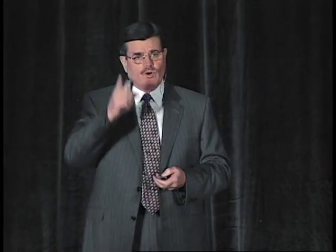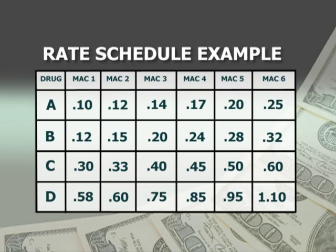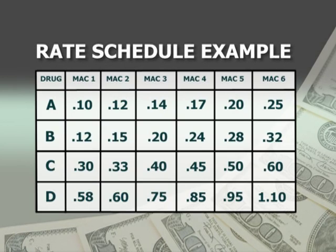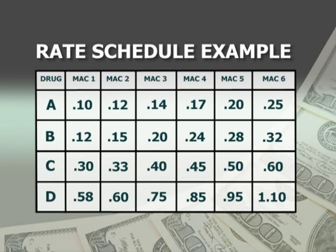We're going to talk about multiple MAC lists and discount lists. These MAC prices are put into categories. In a PBM computer you will see pages of charts — basically spreadsheets — where down the left column will be the drugs. You'll literally have all the drugs that come generically in a list. That list may be twelve hundred, fourteen hundred, fifteen or sixteen hundred drugs — all the MAC drugs. With each drug there's a set of pricing information per unit: per tablet, per capsule, per milliliter, whatever the unit is.